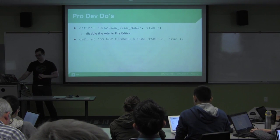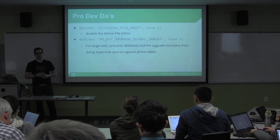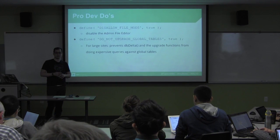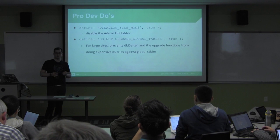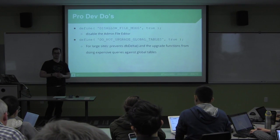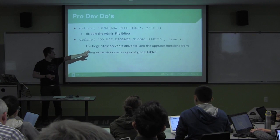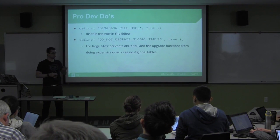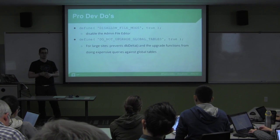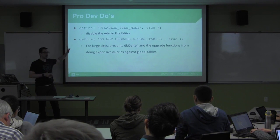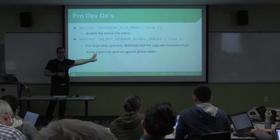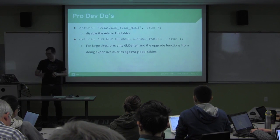Do Not Upgrade Global Tables — this is only important for large sites. When you have a large Multisite network, you want to stop plugins from doing bad things with your database. This prevents sites from running DB Delta to do upgrade things that take a lot of time and processing power on your database — you'll handle all of this yourself, ideally with a database admin.